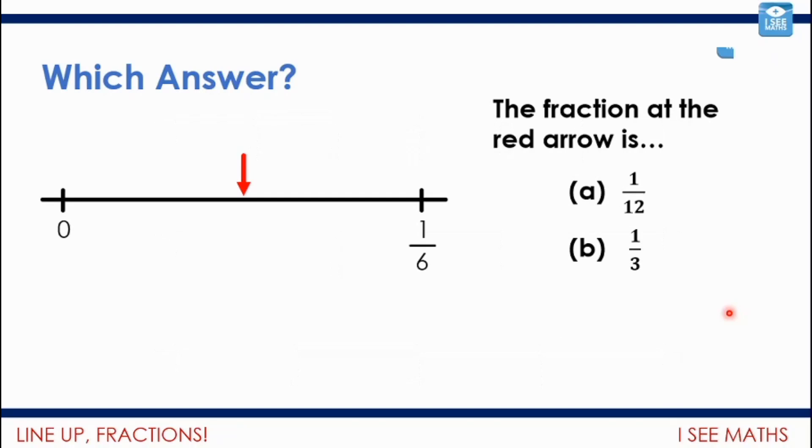Now have a look. Which answer is correct here? So the fraction at this red arrow, which is halfway between zero and a sixth, is—is it a twelfth, or is it a third? Pause the video. Well, let's have a look. Well, it is actually half of a sixth. Now, you don't just halve six, because a third is more than a sixth. The sixth is a smaller piece. So it is actually a twelfth.